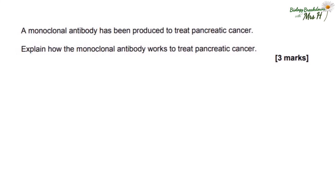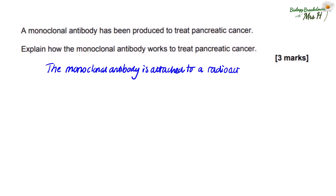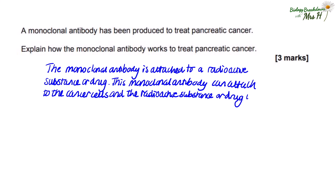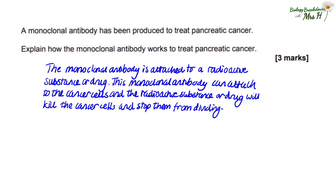A monoclonal antibody has been produced to treat pancreatic cancer. Explain how the monoclonal antibody works to treat pancreatic cancer. The monoclonal antibody is attached to a radioactive substance or anti-cancer drug, and this monoclonal antibody can attach to the cancer cells. The radioactive substance or drug will then kill the cancer cells and stop them from dividing.